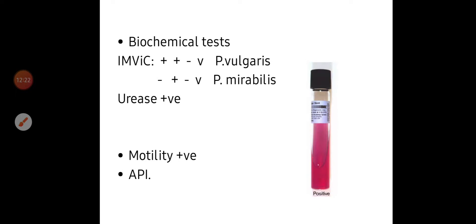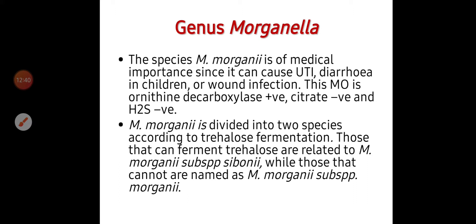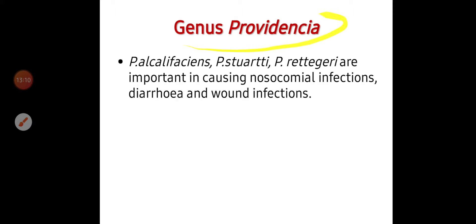Biochemical reactions using IMViC for Proteus vulgaris: indole positive, methyl red positive, VP negative, citrate variable. For Proteus mirabilis: indole negative, methyl red positive, VP negative, citrate variable. Urease test is positive — very important, producing pink color. Motility is positive; they are highly motile. The API system can differentiate them from other species. Another member of non-lactose fermenters is Morganella. The species is Morganella morganii, of medical importance, causing wound infection and urinary tract infection. It is ornithine decarboxylase positive, citrate negative, and H2S negative — so there will be no black discoloration.